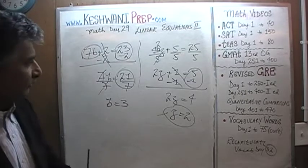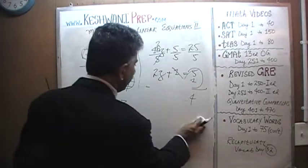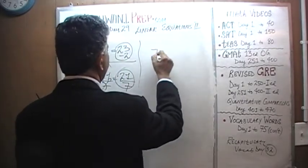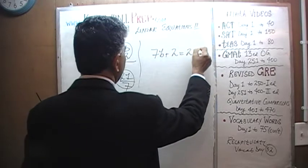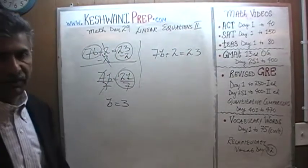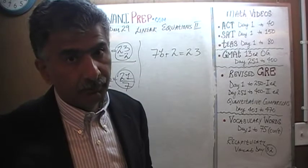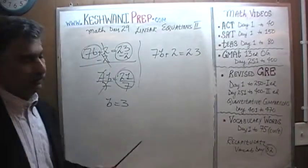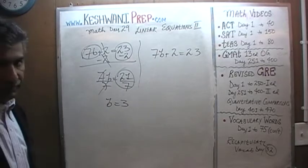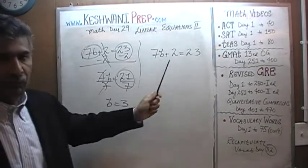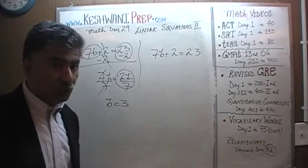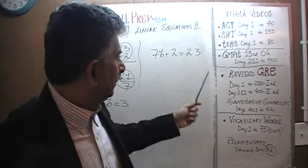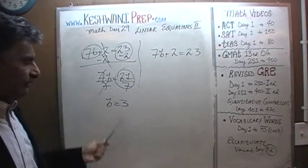What else could we have done with this equation? Let's rewrite it here. 7b plus 2 equals 23. What else could we have done here? The answer is nothing — nothing at all. There are no common factors here. This is about the only way. This equation cannot be simplified. If you could simplify an equation right from the very beginning, you should simplify it before you do all the work. But this equation cannot be simplified — that's the only way to go about it.